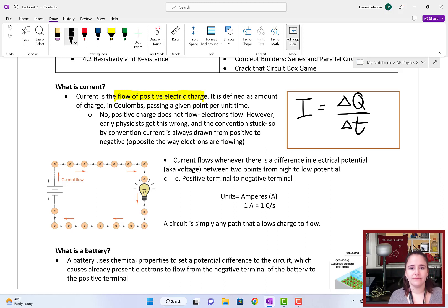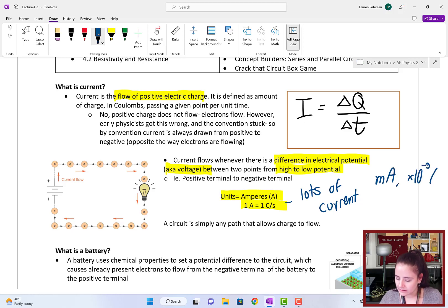But why does current flow? Well, we learned that in electrostatics. Anytime you have a difference in electrical potential, aka voltage, current will flow from high to low potential, just like positive charges. The units are amperes, or amps, where one amp is defined as one coulomb per second. One coulomb per second is quite a bit. We define a circuit as just any path that allows this current to flow. We'll often be working in milliamps, which is times 10 to the negative 3 amps, or microamps, which is times 10 to the negative 6 amps.